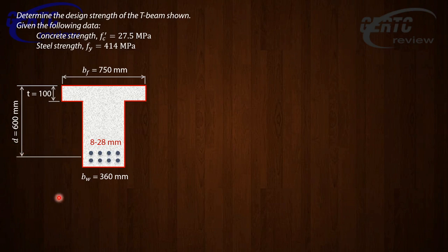First, let's compute the steel area. The steel area As for eight 28 mm bars is equal to 4926 square mm. For our beta 1, our fc prime is less than 28 MPa, so your beta 1 is equal to 0.85. Let's also compute the flange area. The flange area is 750 times 100, and that's 75,000 square mm. Just make that a practice whenever you are solving T-beams.